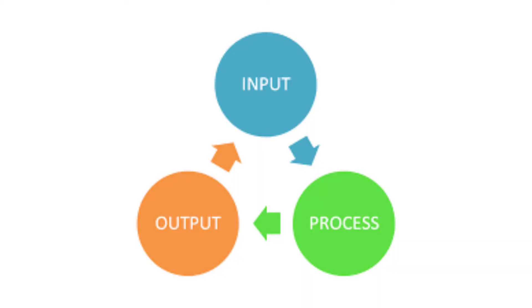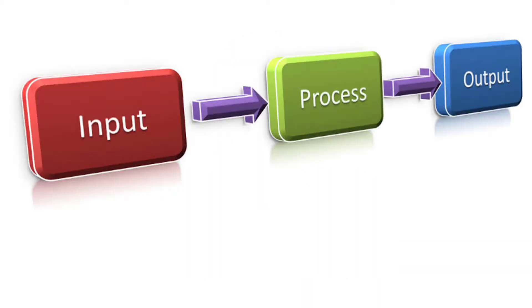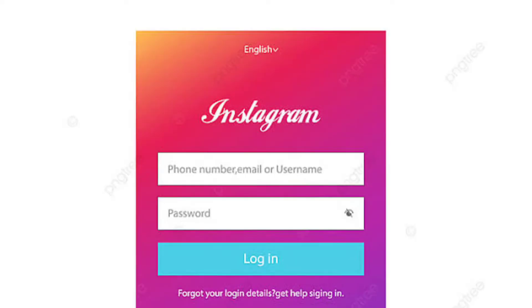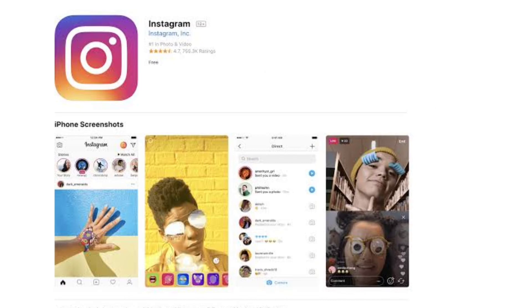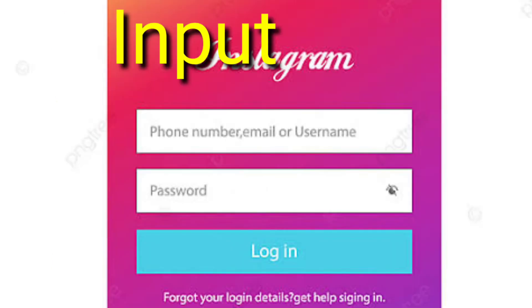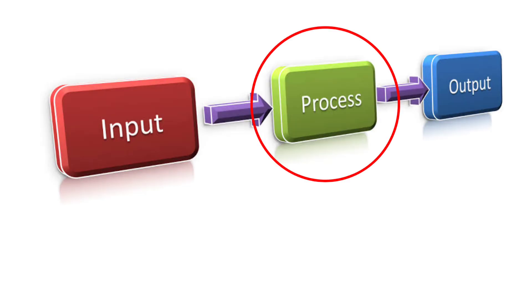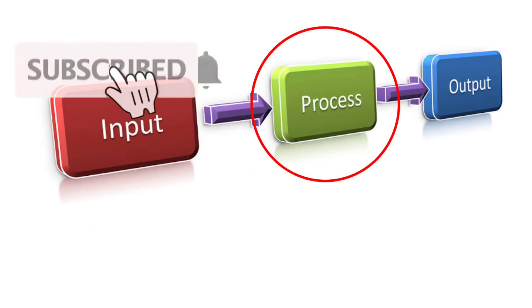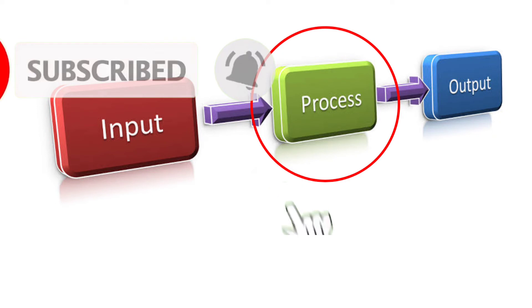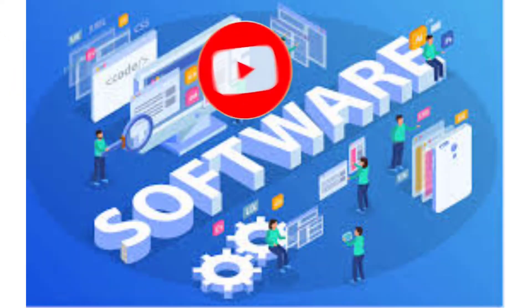IPO stands for Input, Process, Output — these 3 stages work together. For example, in Instagram login, the email and password are 2 inputs, and the output is the account being opened. The input goes to the processor, the processor runs the processing, and the output is produced.